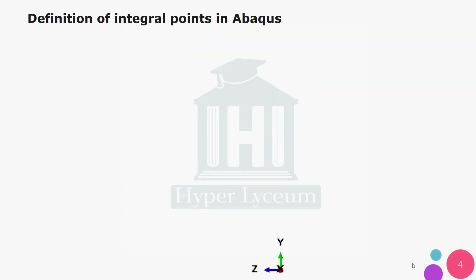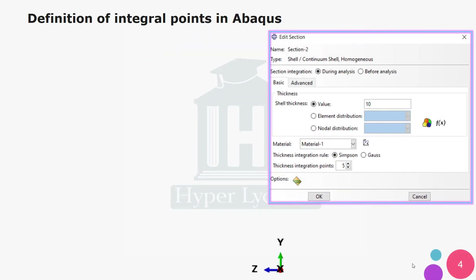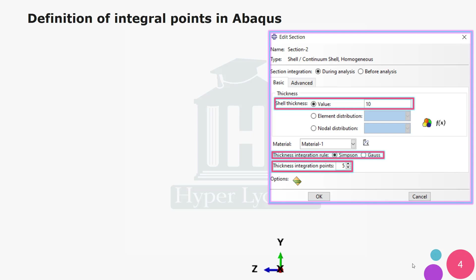In the property module of Abacus the thickness of shell elements is defined. To place section points, the thickness integration rule — which can be either Simpson rule or Gauss — is selected. The number of section points through the thickness is five by default, but Abacus help suggests nine section points through thickness where higher accuracy is required.